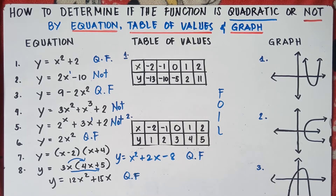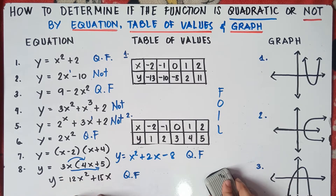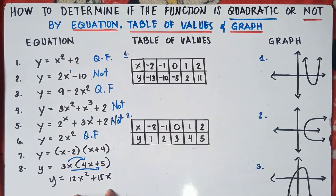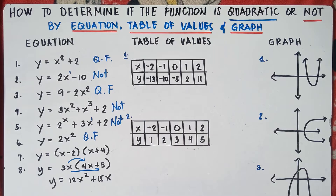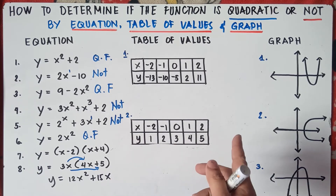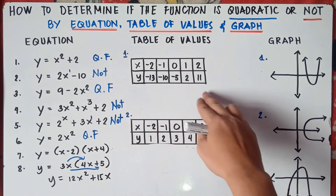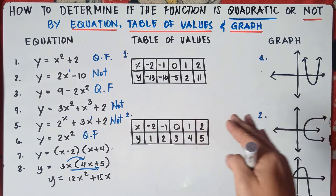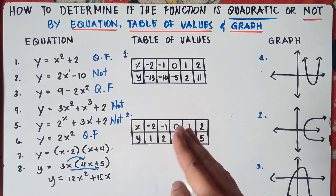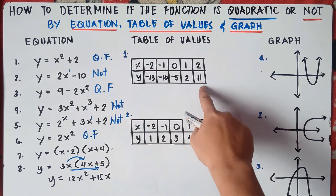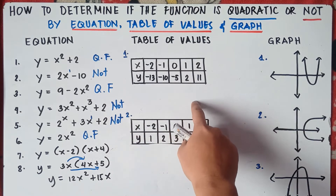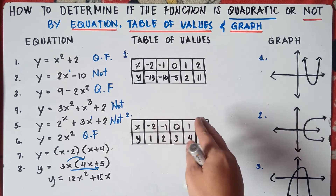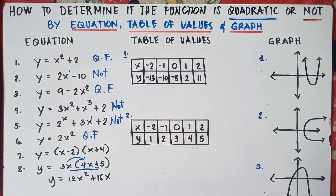Now let's go to the table of values. To check if a function is quadratic or not, you need to get the difference of y, subtracting from right to left. When you subtract and your first difference answers are all the same, therefore that function is not quadratic — it is a linear function. In a quadratic function, you need to get the second difference; the second difference must be the same.